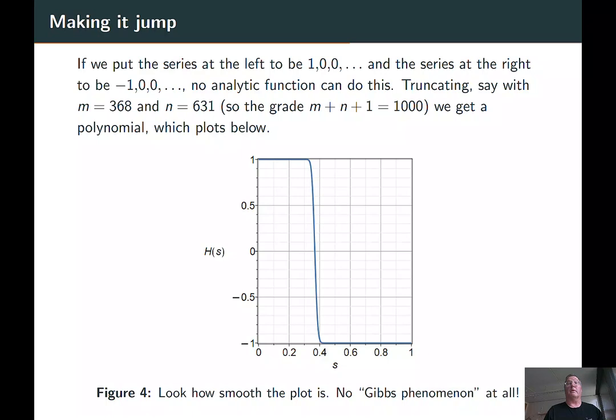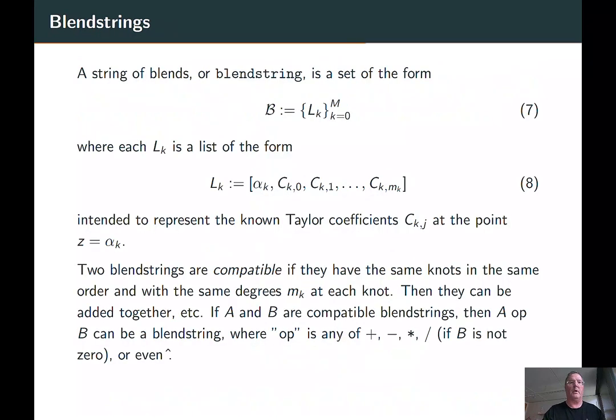So here's a function which is not analytic. This function is 1 and all its derivatives are 0 at the left end and it's minus 1 and all its derivatives are 0 at the right end. So there's no analytic function that does that when you have infinite series there. But if you just plug those things in, you get a wonderfully smooth polynomial that goes from one side to the other without any difficulty at all. Those are the individual pieces.